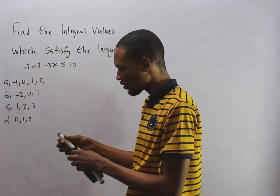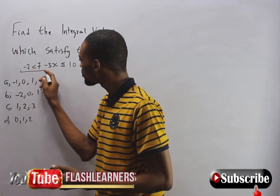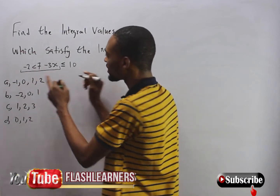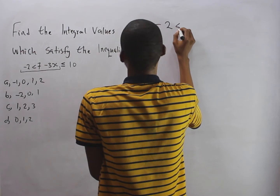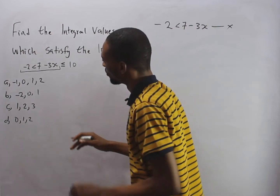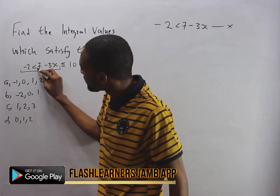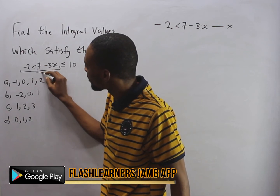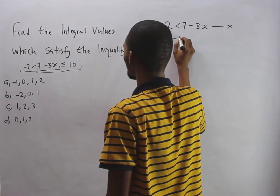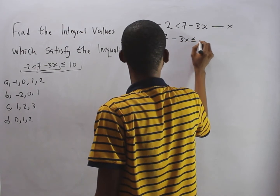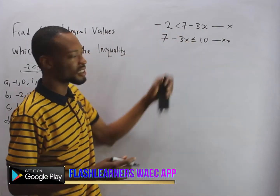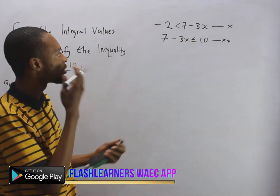When you see something like this, draw from the beginning to the beginning of the second inequality sign. So you write out: minus two lesser than seven minus three s — call this S1. Then from the end of the first inequality sign draw to the end, so you have seven minus three s is lesser than or equal to ten — call this S2. Now let's solve the two separately.